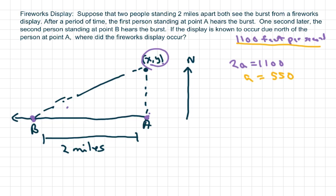The distance between the two people is 2 miles. And since we're talking about feet per second, we want to go ahead and convert that to feet. So we're going to have each person is the foci, so that's C. So we have 2C equals 10,560. So basically, C is 5280.